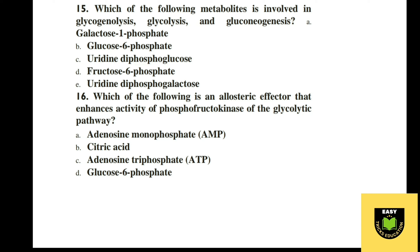Question 15. Which of the following metabolites is involved in glycogenolysis, glycolysis, and gluconeogenesis? A galactose-1-phosphate, B glucose-6-phosphate, C uridine-diphosphoglucose, D fructose-6-phosphate, E uridine-diphosphogalactose. The correct option is B, glucose-6-phosphate.